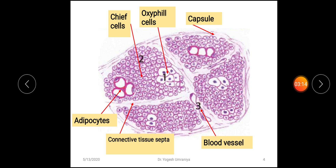Another type of cell is known as the chief cell. They are present in numerous amounts compared to the oxyphil cells, which are lesser in number. The size of the chief cell is small compared to the oxyphil cells. Chief cells have a vesicular nucleus and stain somewhat lightly eosinophilic compared to the oxyphil cell. Chief cells are concerned with the production of the protein termed parathyroid hormone.